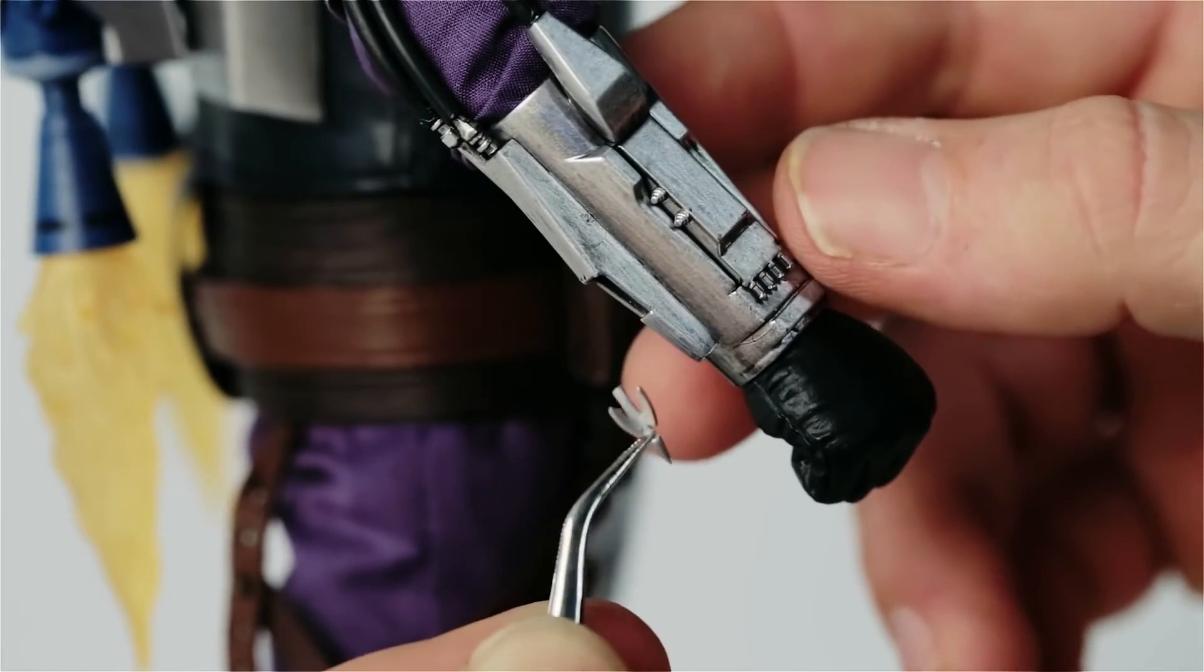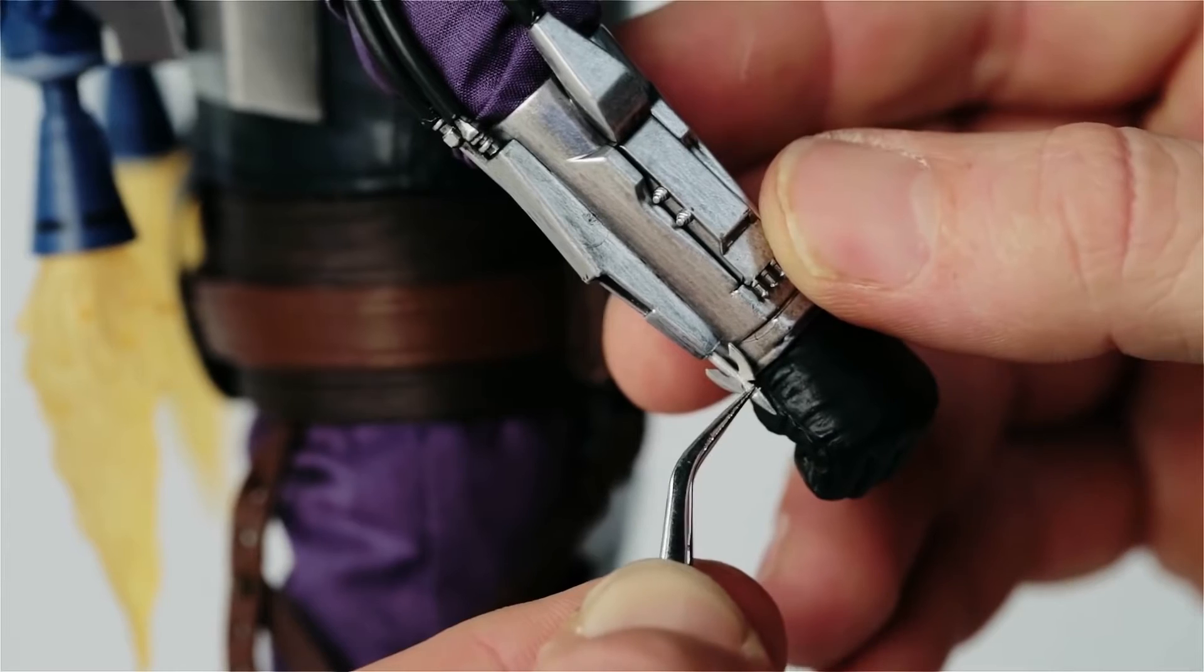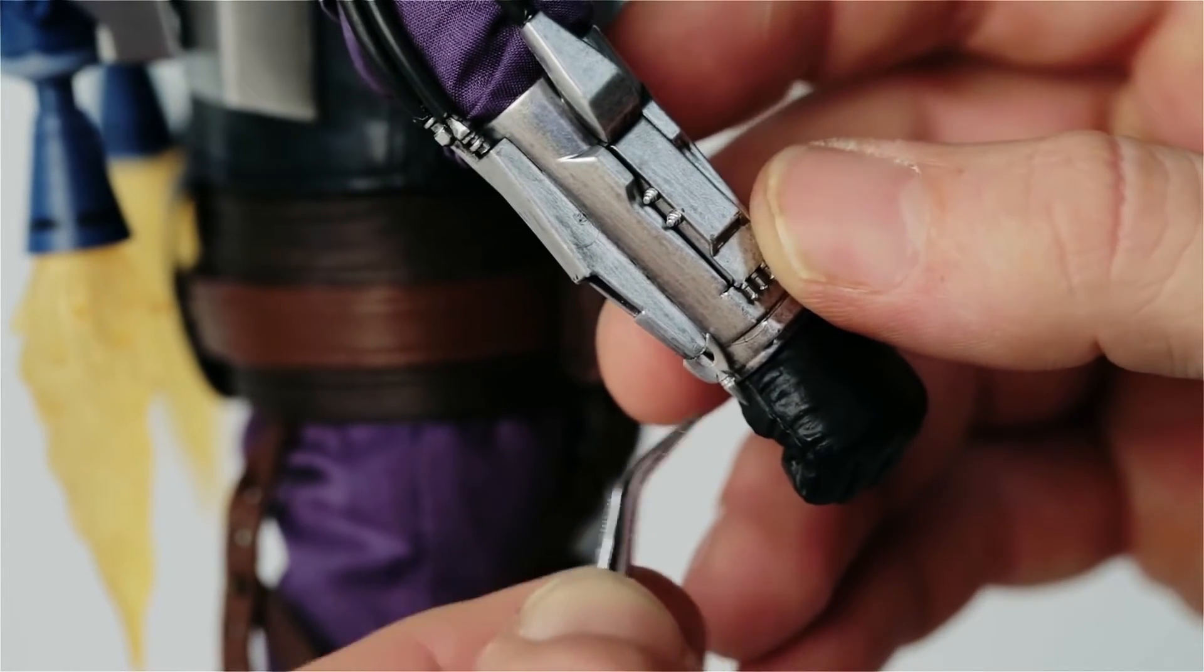The saber dart fits into the right arm gauntlet. As it is a small piece, you may wish to use tweezers for precision.